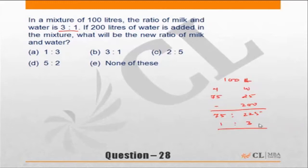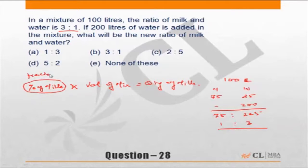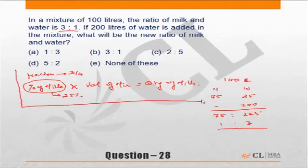But I want you to understand the underlying concept. Going back to basics of percentages: percentage of milk multiplied by volume of mixture equals quantity of milk. Instead of percentage of milk, you could say fraction of milk. In this question, the fraction of milk is 3/4, and the percentage of milk is 75%.